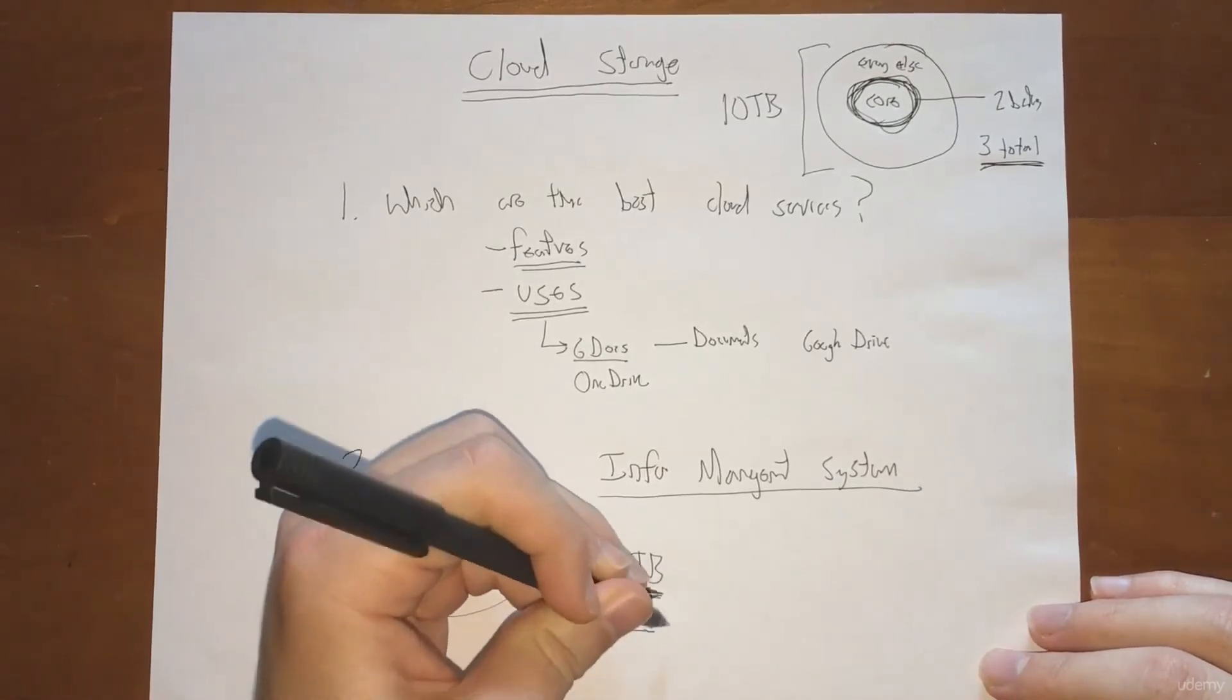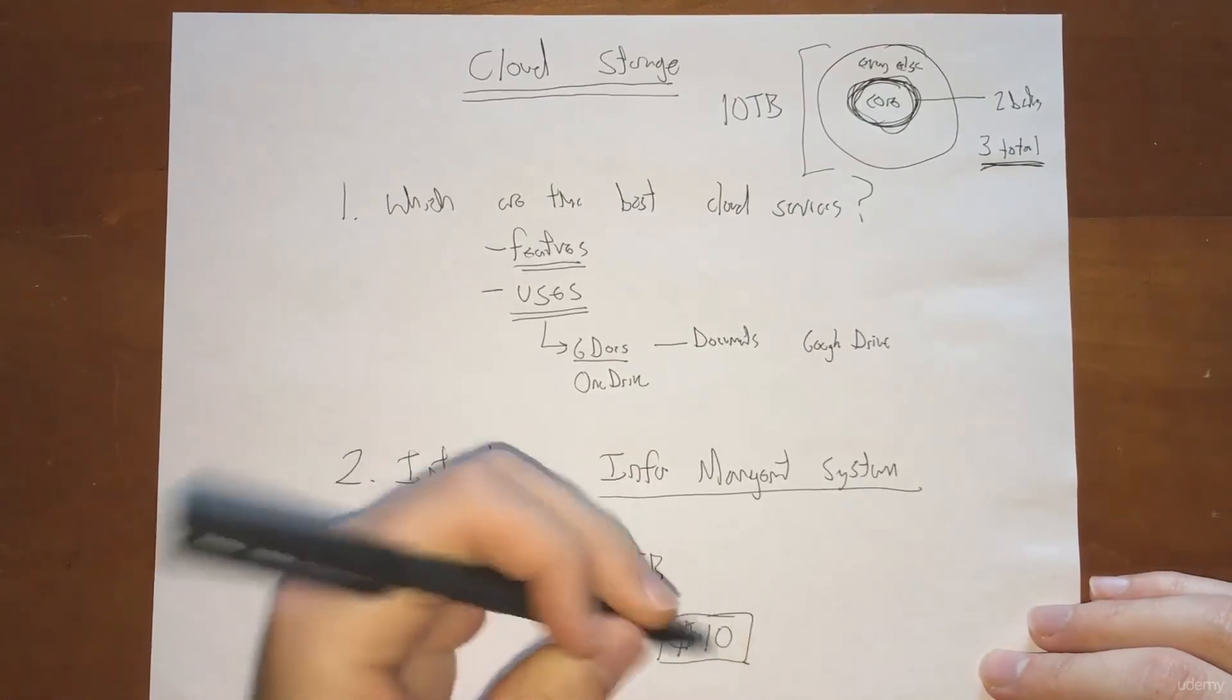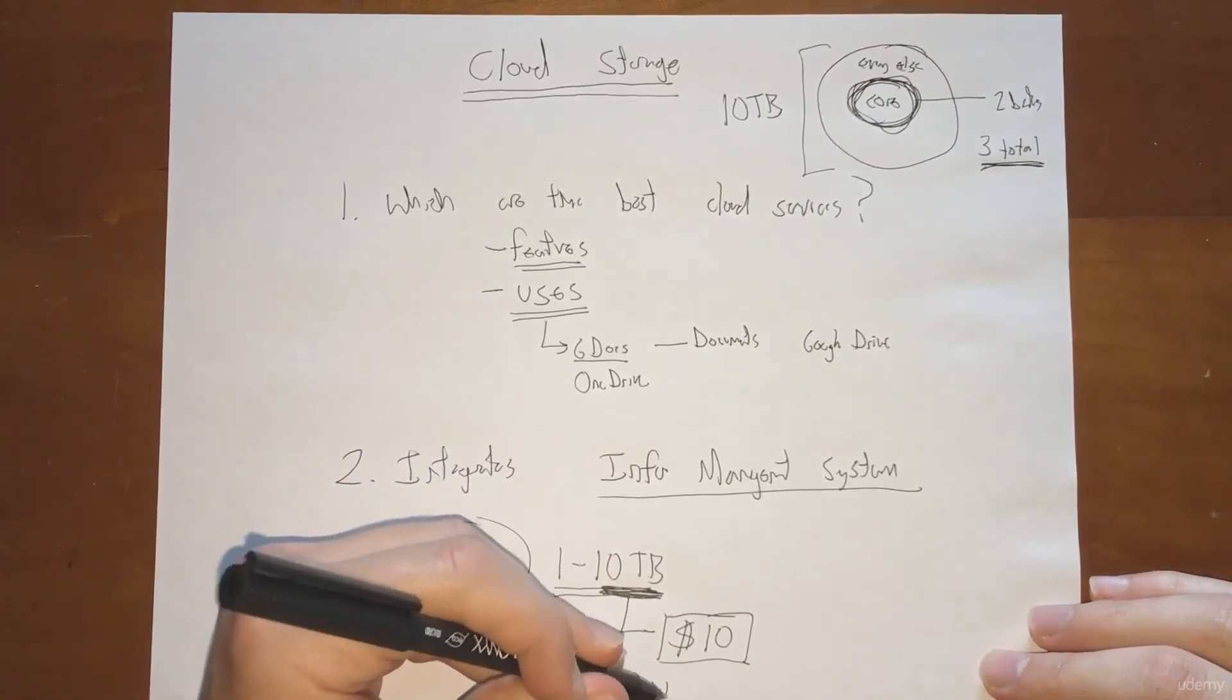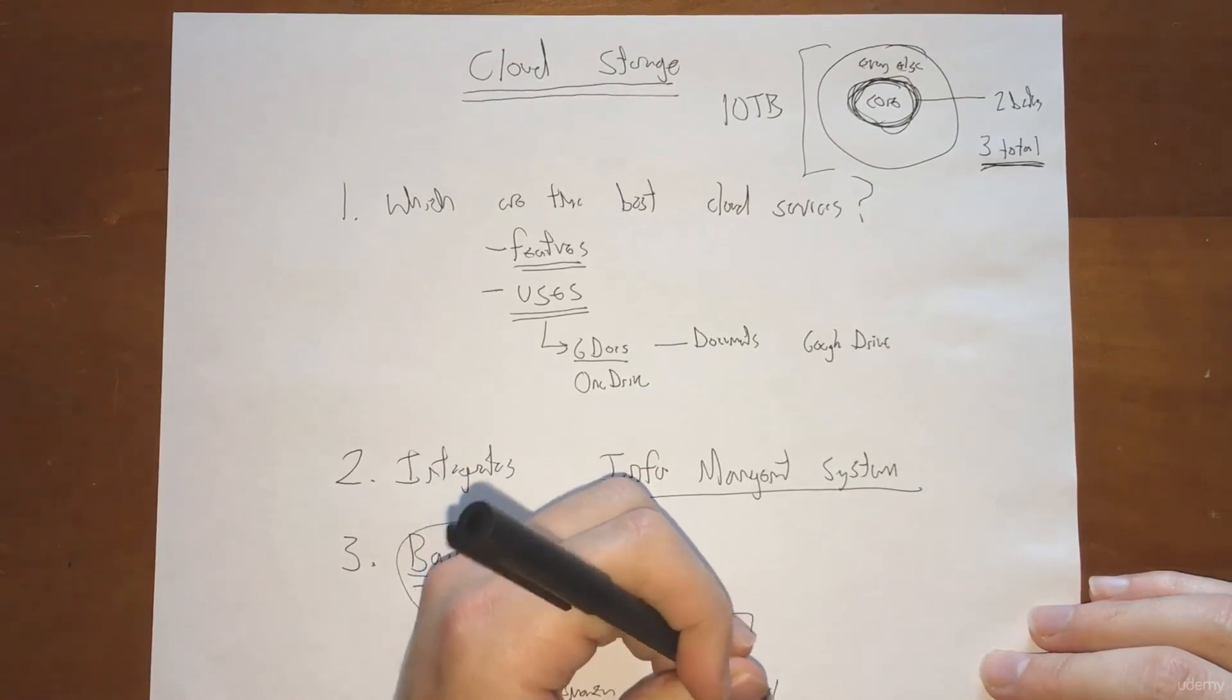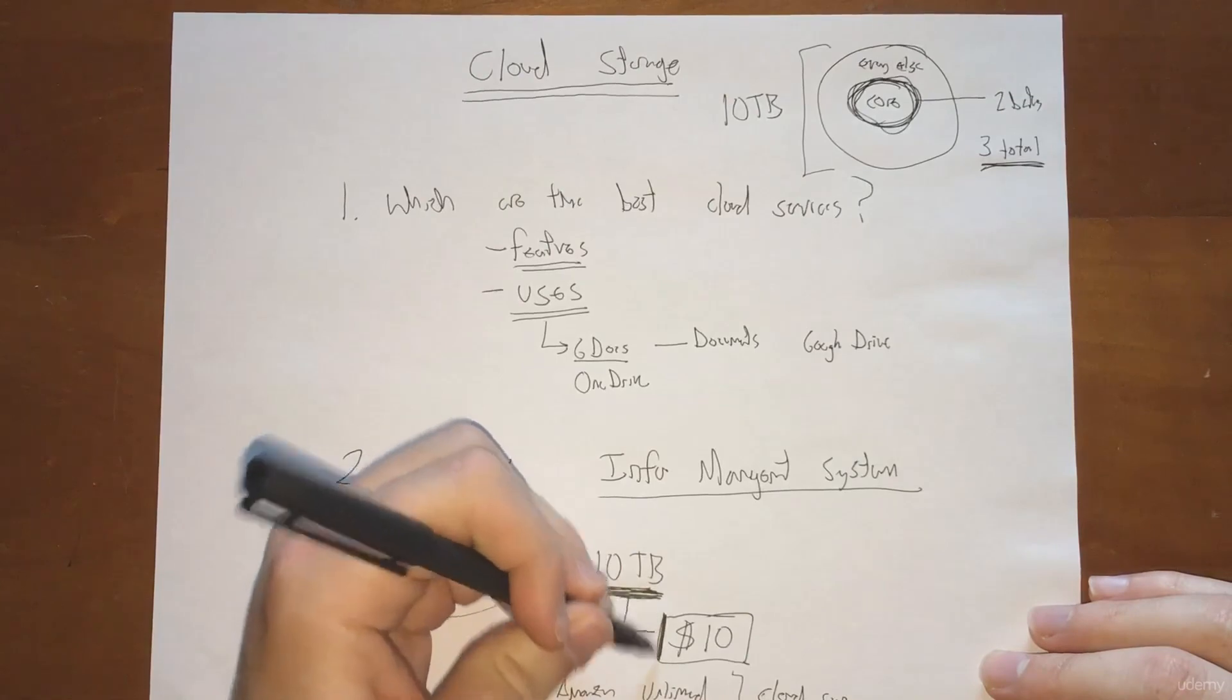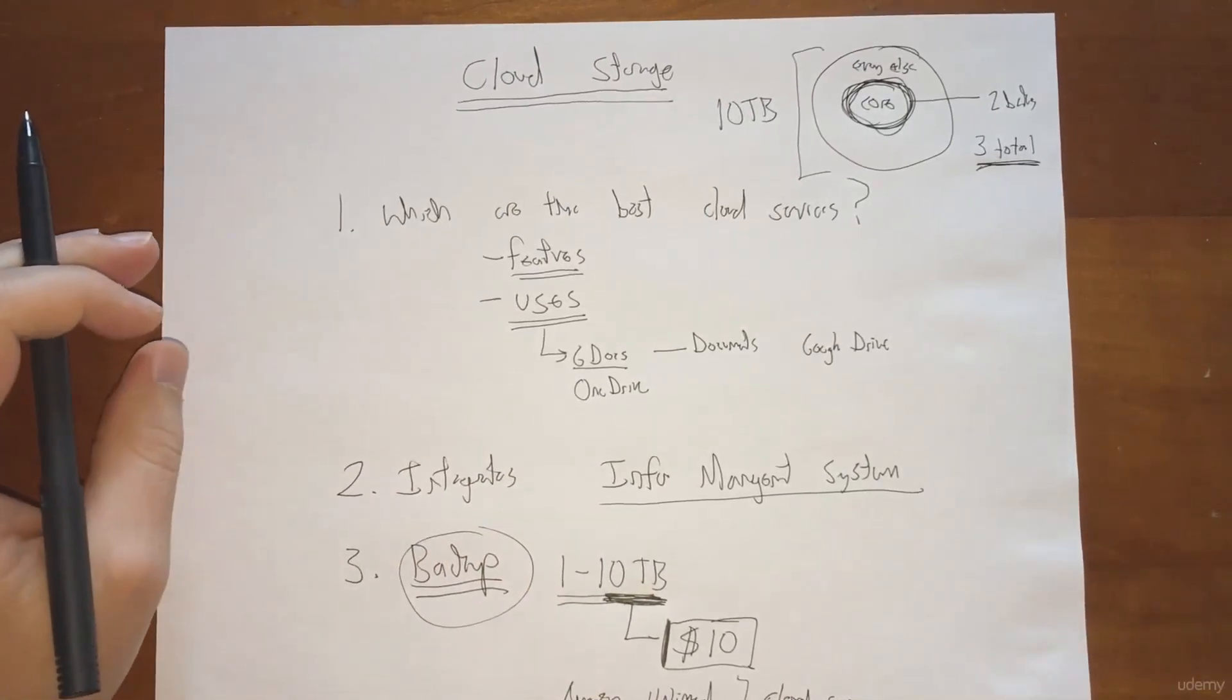Including, by the way, you're going to learn the service where you can get 10 terabytes per month for $10 a month. And you're going to learn about Amazon's unlimited, which does have some pretty bad limitations - you can't really use it as a cloud sync like you can with the other ones. This is not Amazon unlimited, this is another one that you're going to learn about later on in this course.